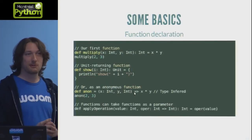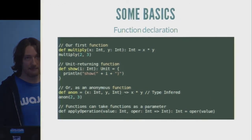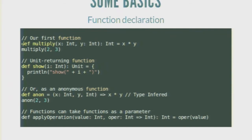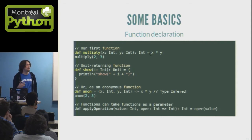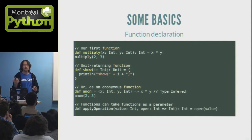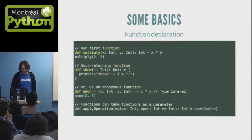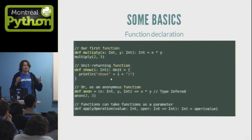Since Scala is mostly a functional programming language, you need to declare functions. You declare them with the def keyword, like in Python. As an example, that function takes two parameters, x and y, both of them are int, and it returns an int. I've implemented it on one line — it's just a simple function multiplying two values. You can call it like that. For unit-returning functions, rather than using a special syntax that may be deprecated in an upcoming Scala version, you should specify that the function returns unit and treat it as a normal function.